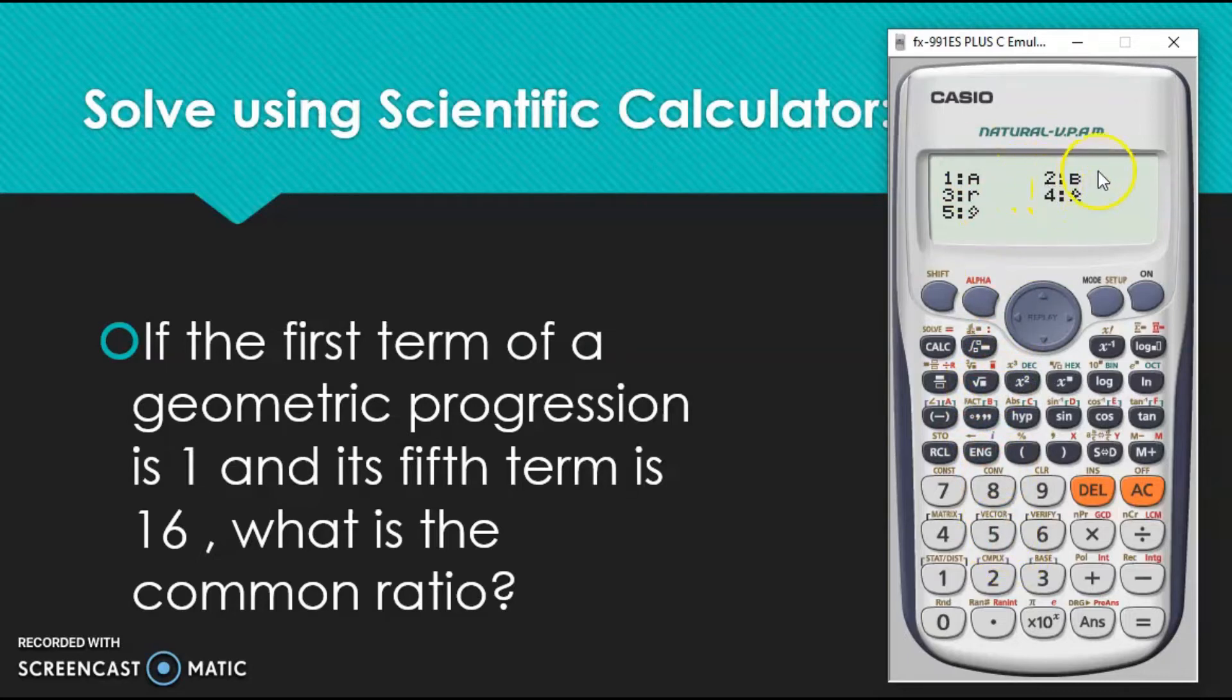And yung value ng common ratio is yung B, number 2. Then click equals. Therefore yung common ratio is 2.